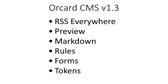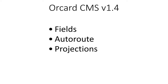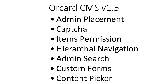On version 1.3, they added RSS Everywhere, preview markdown, rules, forms, and tokens. They also added fields, autoroute, and projections. On version 1.5, they added admin placement, CAPTCHA, items permission, hierarchical navigation, admin search, custom forms, and content picker.